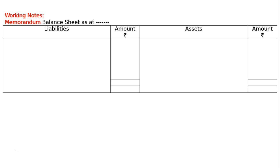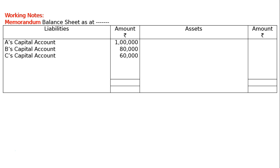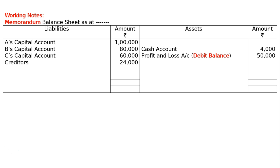Working notes: We have to prepare a memorandum balance sheet. We have the liabilities and amount, and assets and amount with Rs. symbols. We will prepare this memorandum balance sheet to find out the sundry assets. On the liabilities side: A's capital account Rs. 1,00,000, B's capital account Rs. 80,000, C's capital account Rs. 60,000, and creditors Rs. 24,000. On the asset side, there is a cash balance — cash in hand Rs. 4,000 — and a profit and loss account debit balance of Rs. 50,000.